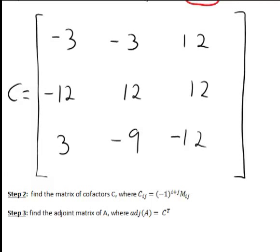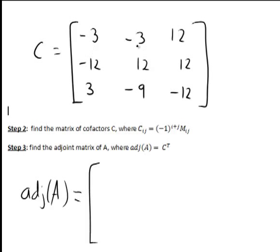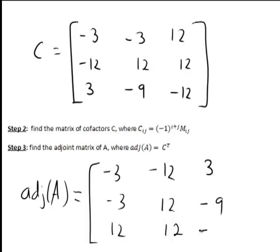The next step is to find the adjoint matrix of A, which is the transpose of our matrix of cofactors. The adjoint, written adj(A), is formed so that the rows of C become the columns of the adjoint. Since the first row of C was [−3, −3, 12], that becomes the first column of the adjoint. The second column is [−12, 12, 12] and the third column is [3, −9, −12].